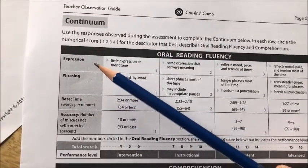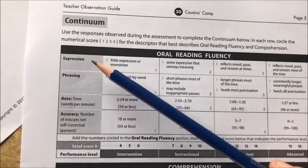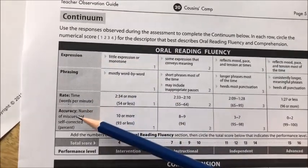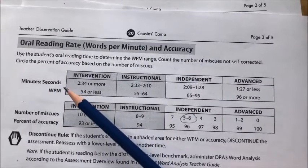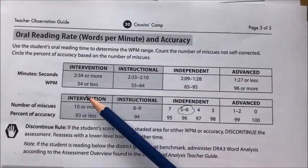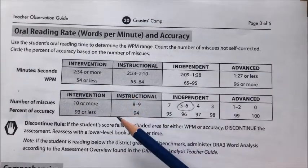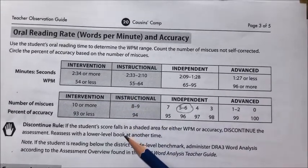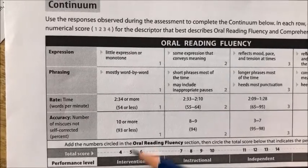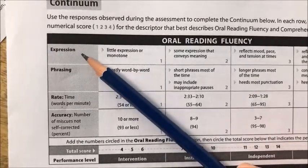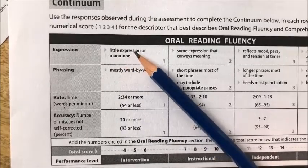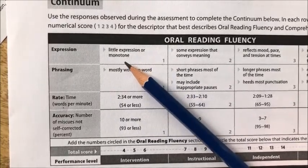Within each of the levels, it is looking at discrete skills such as expression, phrasing, and accuracy. In our school board, we do not record words per minute and focus instead on the quality of the read, including pacing and expression. The intervention level for expression indicates that the student reads with little expression or monotone.